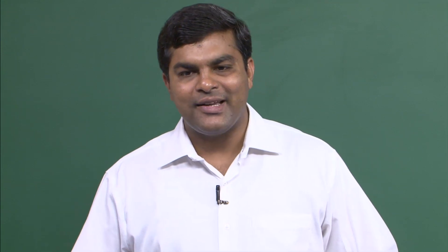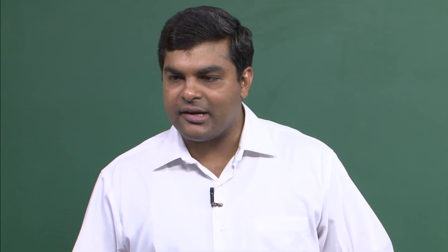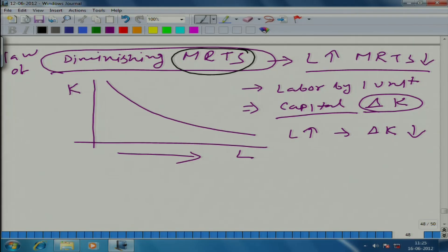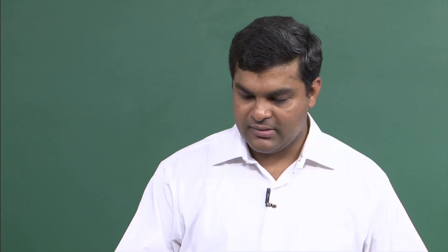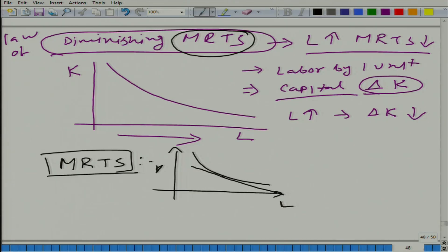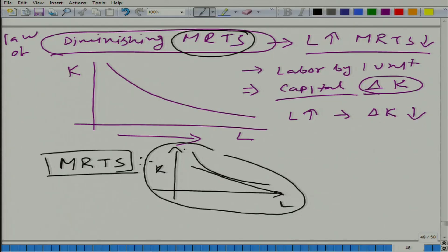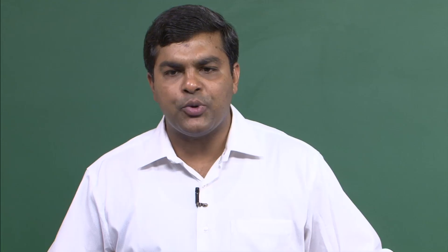We are going to talk about diminishing marginal rate of technical substitution, or diminishing technical rate of substitution — these are just two names for the same concept. To revise: what is MRTS and what does it measure? It measures the slope of the isoquant, but in economic sense, it is the rate at which one input can be substituted for the other while keeping output fixed.